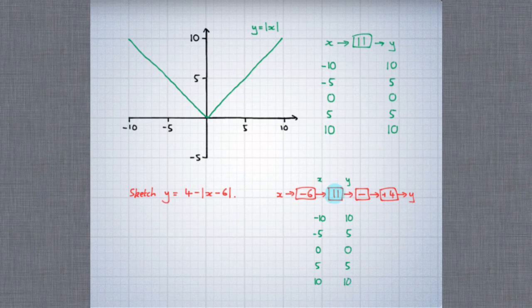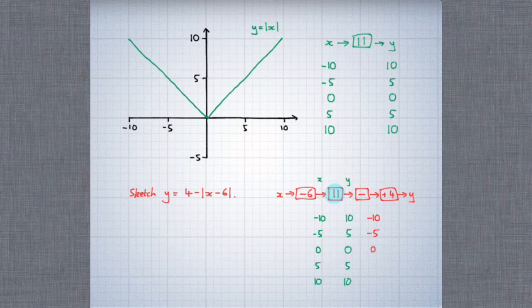This time there are three changes to the coordinates: the y-coordinate changes twice, and the x-coordinate changes once. To get the new y-coordinates from the old ones, first we have to make them negative — so where we had 10 before, now we have minus 10; where before we had 5, now we have minus 5, and so on. Then we add 4, so that minus 10 becomes minus 6, minus 5 becomes minus 1, and so on.